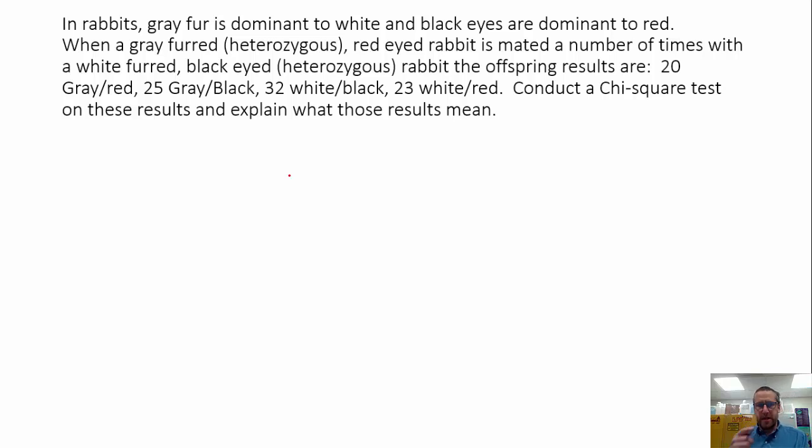So how do we apply that to genetics? Well, we need to have some results. So we're going back to rabbits. We're crossing a gray-furred, heterozygous, red-eyed rabbit. It's mated a number of times with white-furred, black-eyed heterozygous rabbit, and we have some results. So we've got gray-furred, heterozygous, mated with red eyes. So that's going to be homozygous recessive. And then it's white fur, which is recessive, heterozygous. So there's our cross.